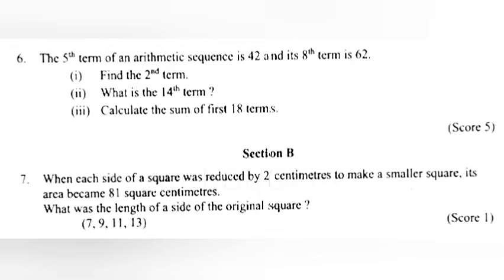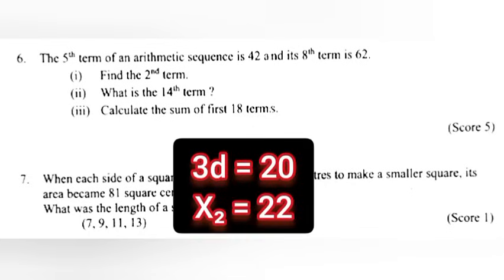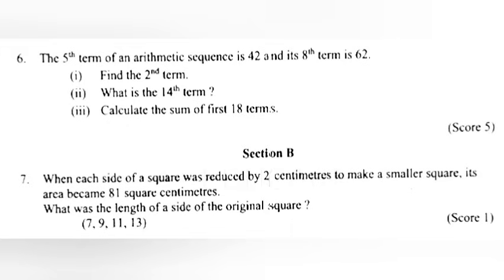Problem 6: The fifth term of an arithmetic sequence is 42 and its eighth term is 62. Part 1: Find the second term. Answer: 3d = 20, so x₂ = 22.